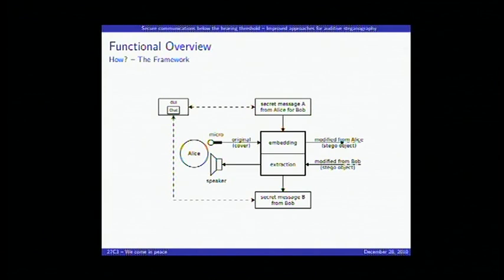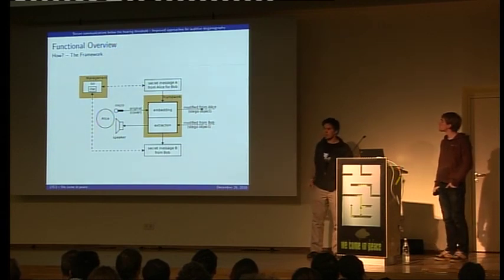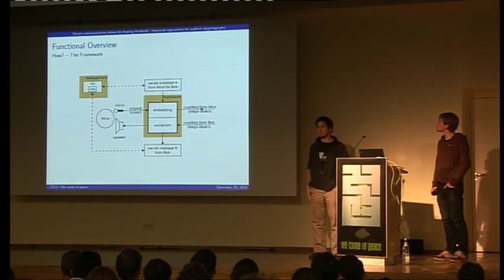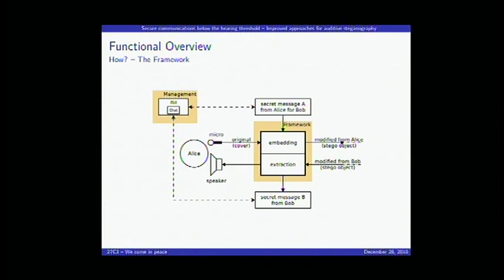Let's talk about the framework. It identifies the major components for one side of the communication — either receiver or transmitter — providing full duplex communications. The framework includes both embedding and extraction algorithms to modify the cover medium and create the stego object, as well as a graphical user interface to control the whole process of extraction and embedding, with secret information supplied via a chat interface.